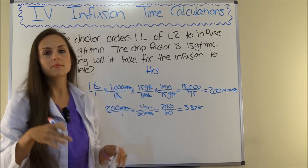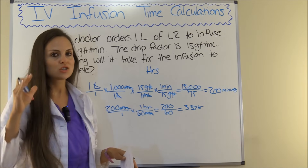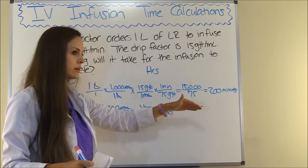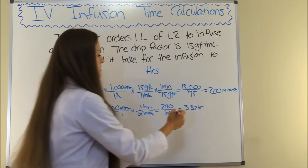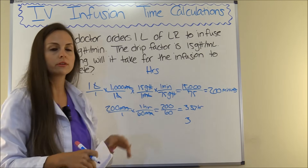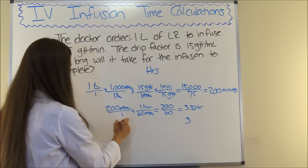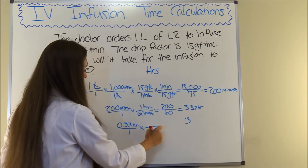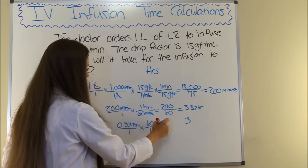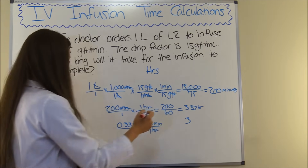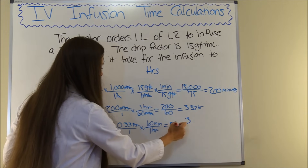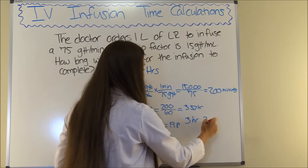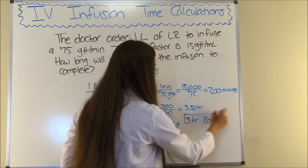Now that's not good enough — most professors want to know hours and minutes. We have 3 hours with remaining fractions, so we need to convert 0.33 hours into minutes. So 0.33 hours times 60 minutes per hour is 19.8, and we round up to 20 minutes. So it's going to take 3 hours and 20 minutes for this bag to infuse.